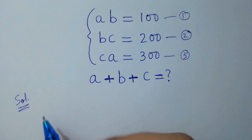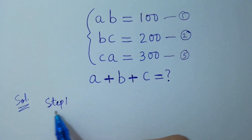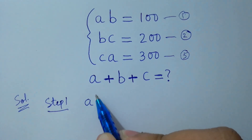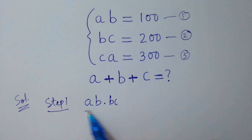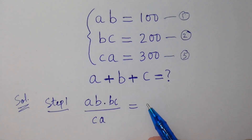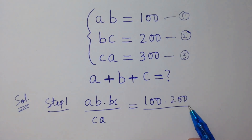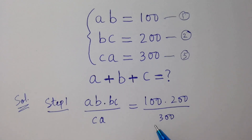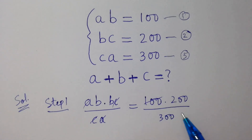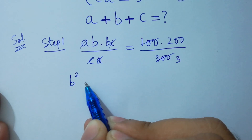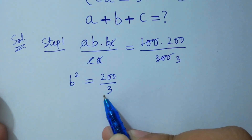Step 1: multiply the first equation by the second equation, then divide by the third equation — that is, (ab × bc) / ca. It will be equal to (100 × 200) / 300. Here, c and c will be cancelled, a and a will be cancelled. We get b squared equals 200 over 3.